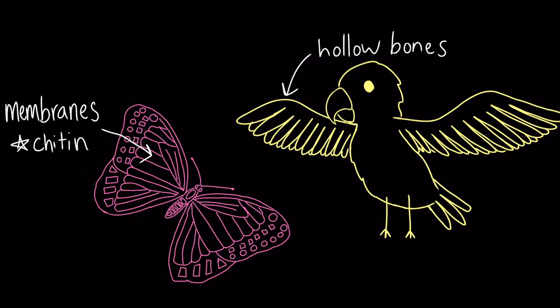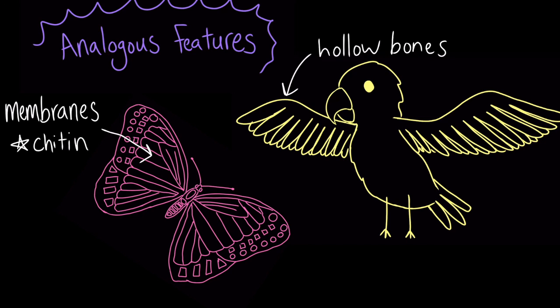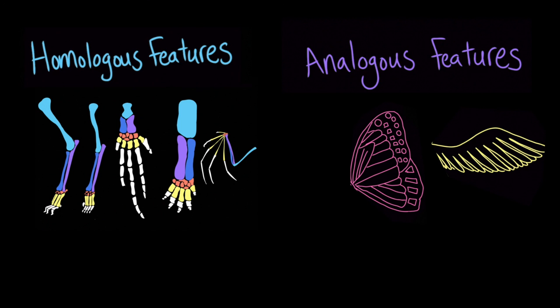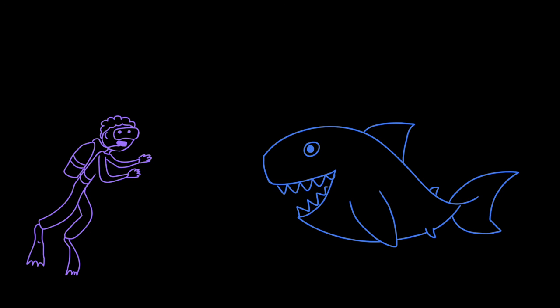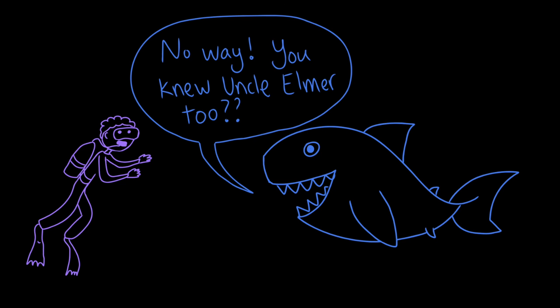This means that bird wings and butterfly wings are analogous features. This indicates to scientists that birds and insects did not inherit that feature from a common ancestor. Instead, the ability to fly using wings evolved independently in each lineage. Comparing the anatomical features of organisms has given scientists a better understanding of how life on Earth has evolved from common ancestors. So next time you meet a friendly shark, perhaps the two of you can bond over your shared ancestry.